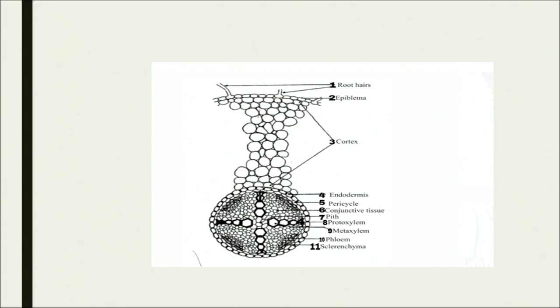Inside the endodermis is the layer called pericycle. The inner side of pericycle has a lot of conjunctive tissue, and pith is at the center. The main conduction of water happens through xylem, and phloem is responsible for movement of food items or nutrients. Xylem is responsible for movement of water and phloem for movement of food materials in the form of starch or glucose, which is synthesized in the green part of the plant and must travel through the entire plant body down to the roots.